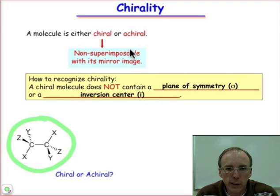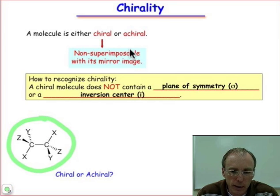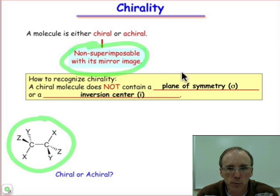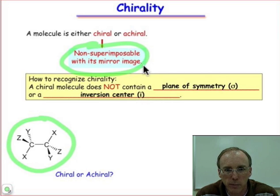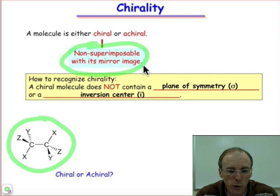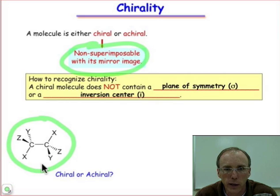The formal definition of chirality means that an object is not superimposable on its mirror image. But I don't like this definition, because it seems to imply that we need to make a comparison between an object and its mirror image in order to decide about chirality. That's not the case at all. In order to decide whether a single molecule is chiral or achiral, we don't need to make any comparison at all.